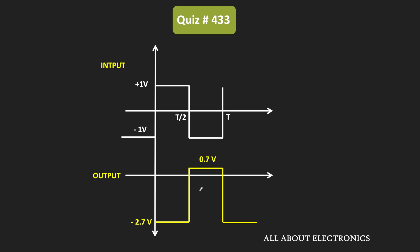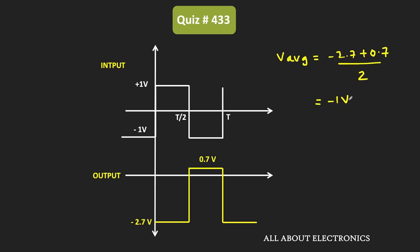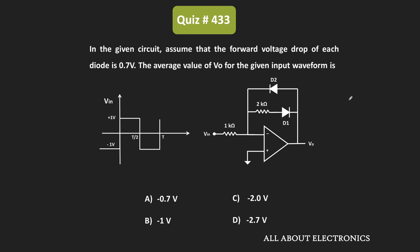This gives us the output waveform: during the positive half cycle when VIN equals +1V, the output is −2.7V, and whenever the input equals −1V, the output is +0.7V. For this waveform, the average value equals (−2.7V + 0.7V) / 2, which equals −1V. The average value of the given waveform is −1V, and hence option B is the correct answer.